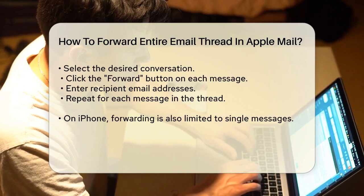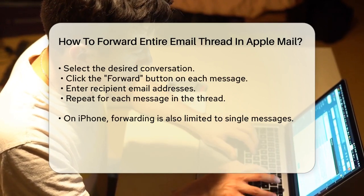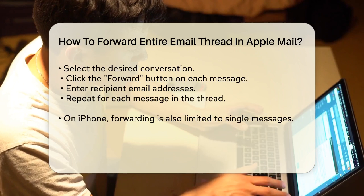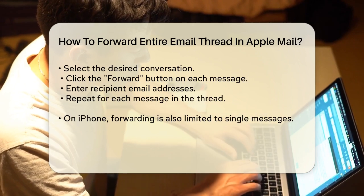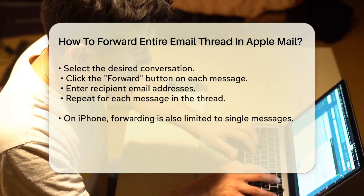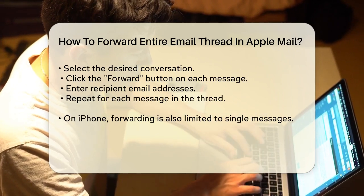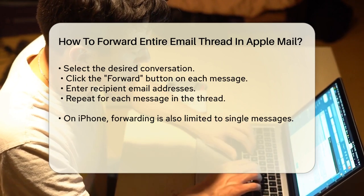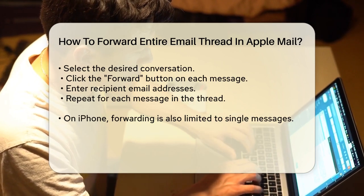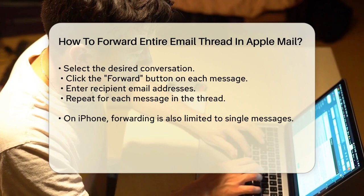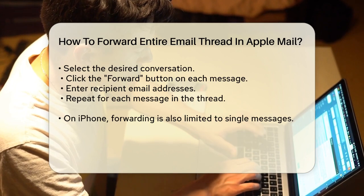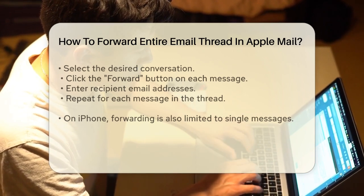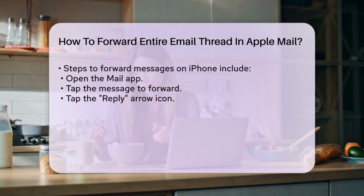Open the Mail app on your Mac and select the conversation you want to forward. Since you can't forward the entire thread at once, you'll have to select each message individually. Move the pointer over the message header, then click the Forward button. Enter the email addresses where you want to send the forwarded message, and repeat this process for each message in the thread.